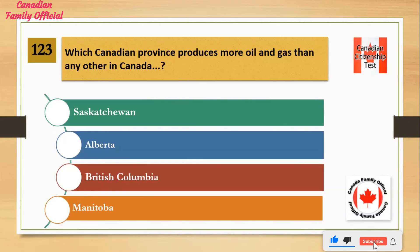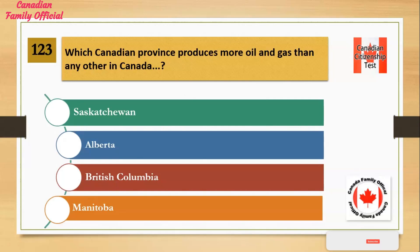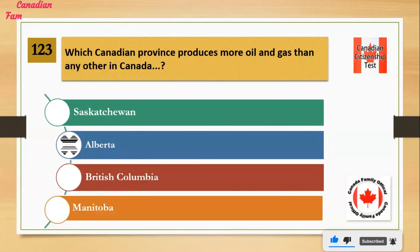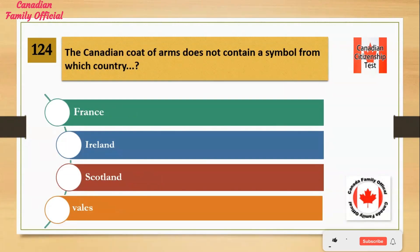Which Canadian province produces more oil and gas than any other in Canada? Number 1: Saskatchewan. Number 2: Alberta. Number 3: British Columbia. Number 4: Manitoba. And the answer is Alberta.